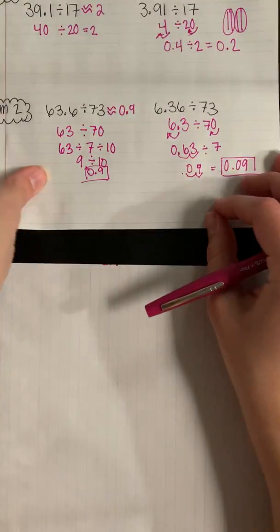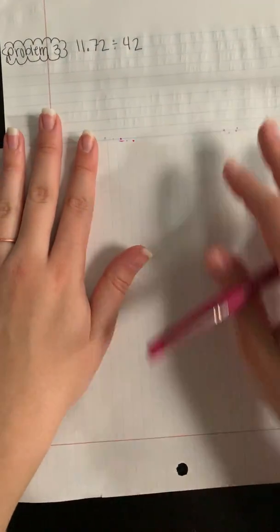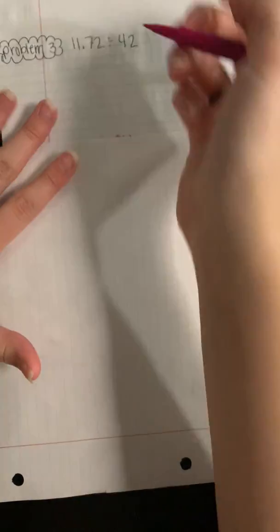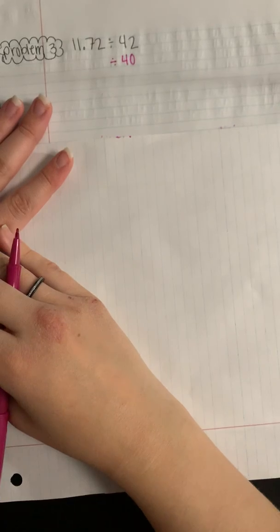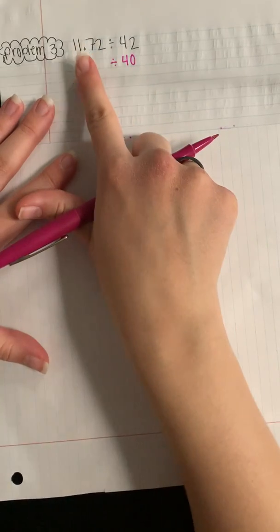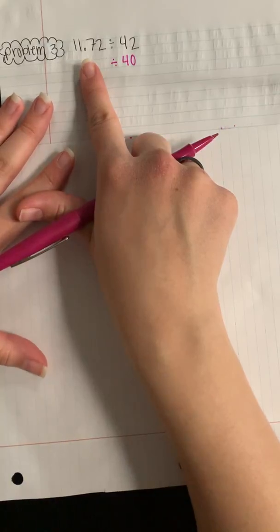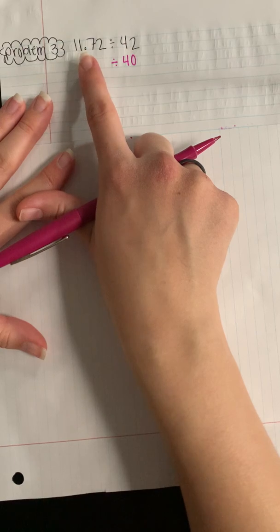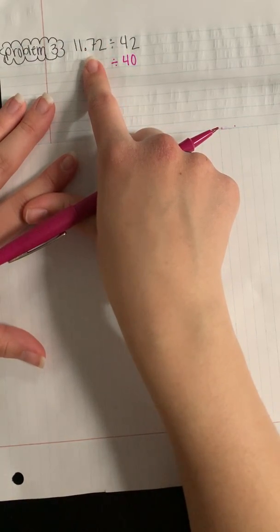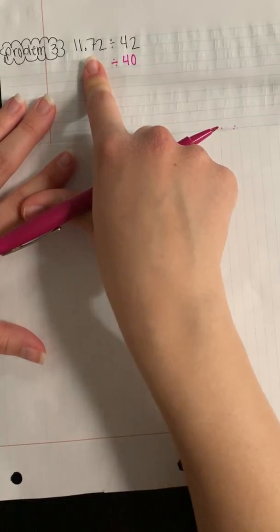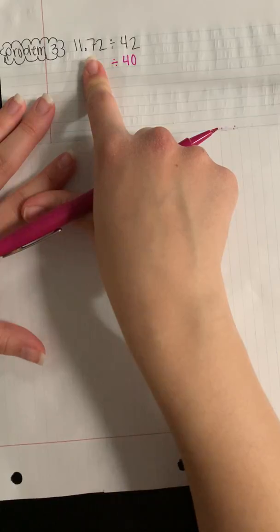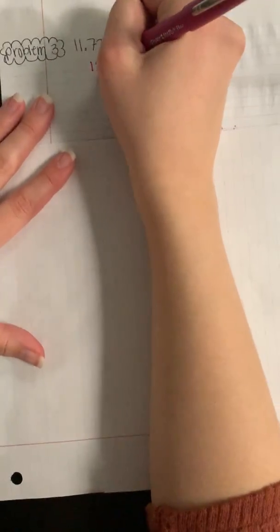All right, and we're going to try one more problem like this. And so we have 11.72 divided by 42. We're going to start by estimating the divisor, so 42 is close to 40. And now I need a multiple of 4 that is close to 11.72. So I know that this would be close to 12, and 12 whole numbers could be broken up into 12 hundredths, so I'm going to write it out like this: 12 divided by 40.